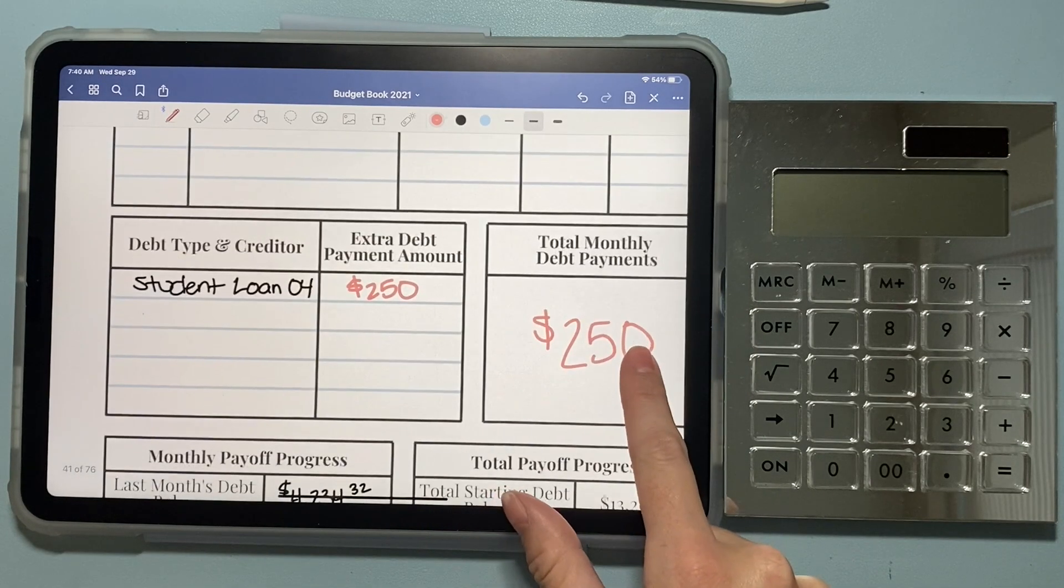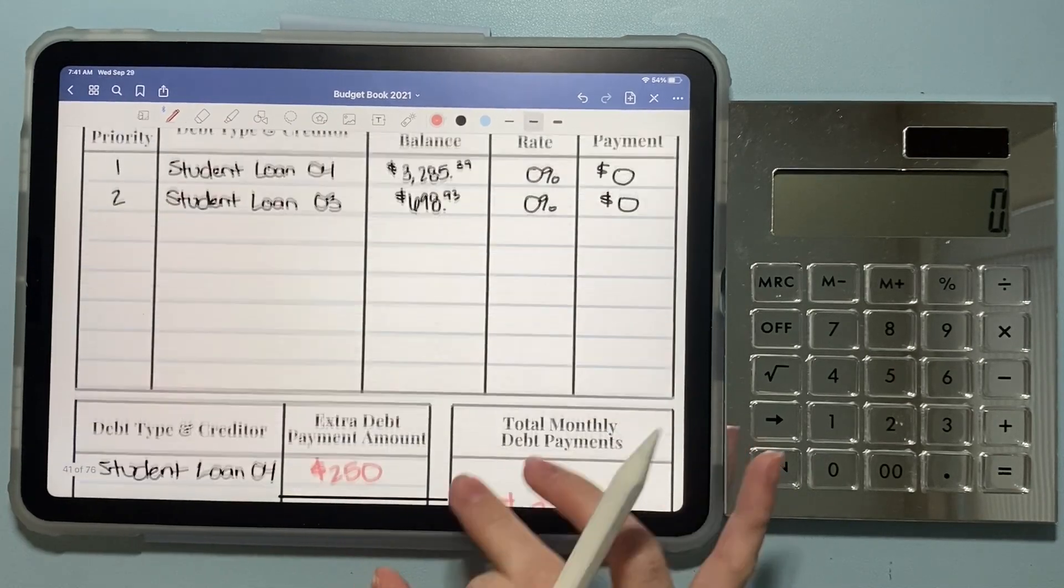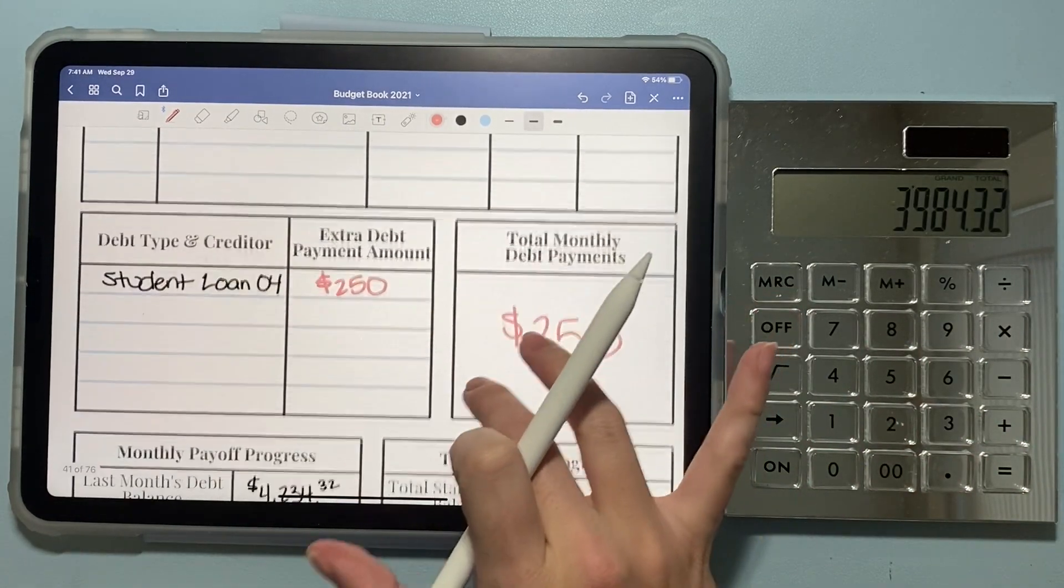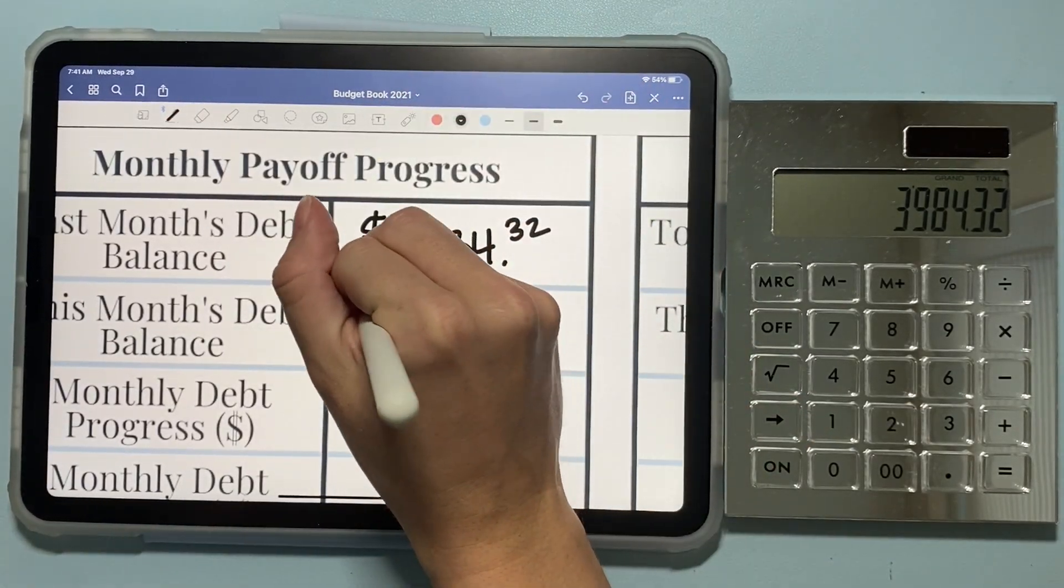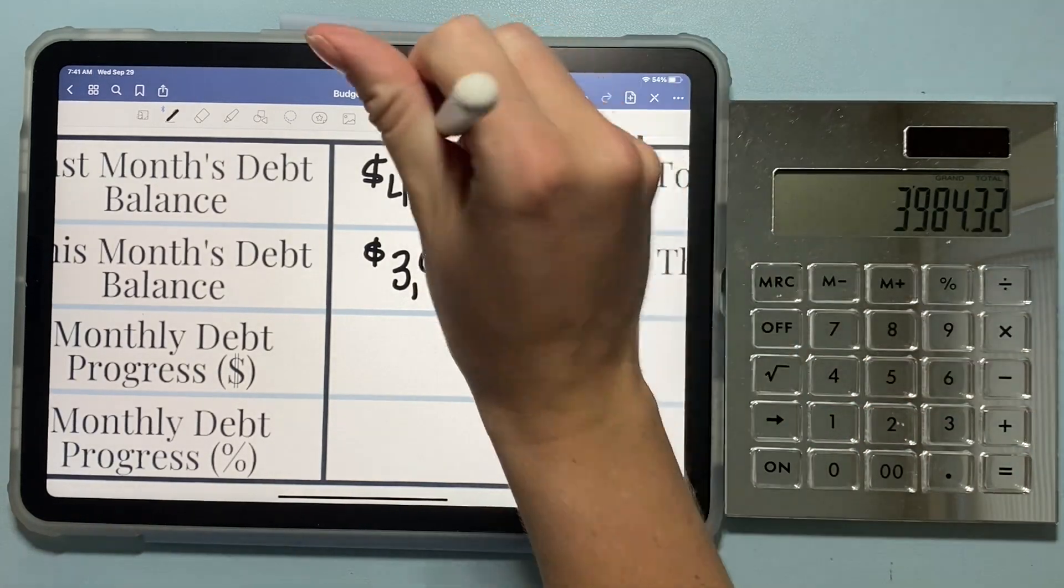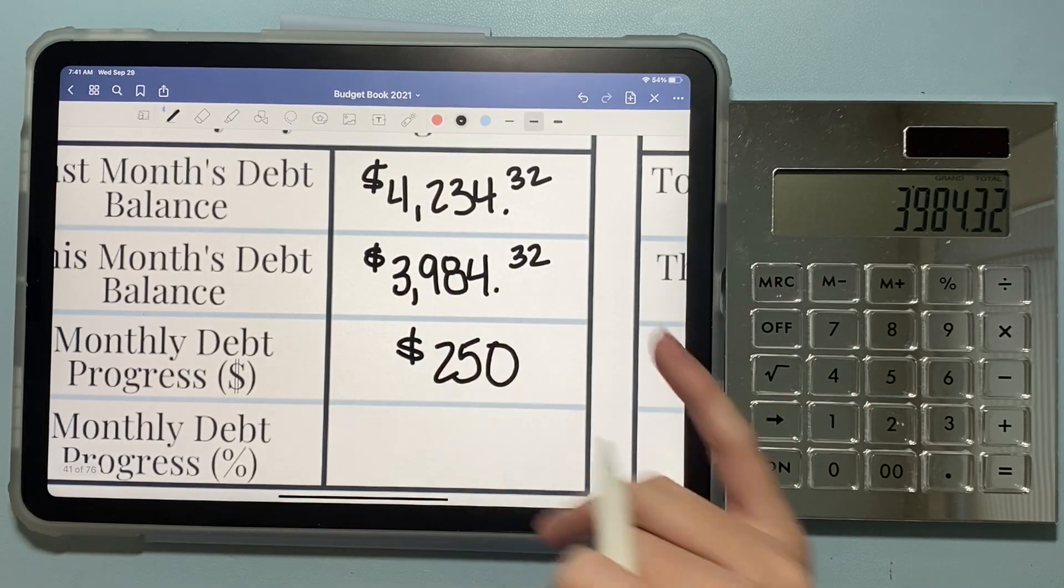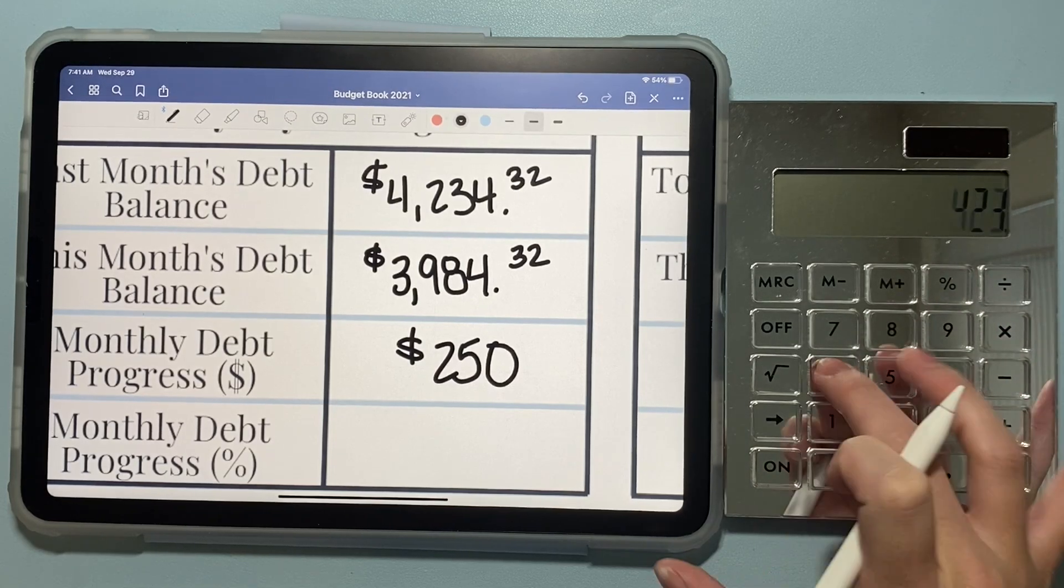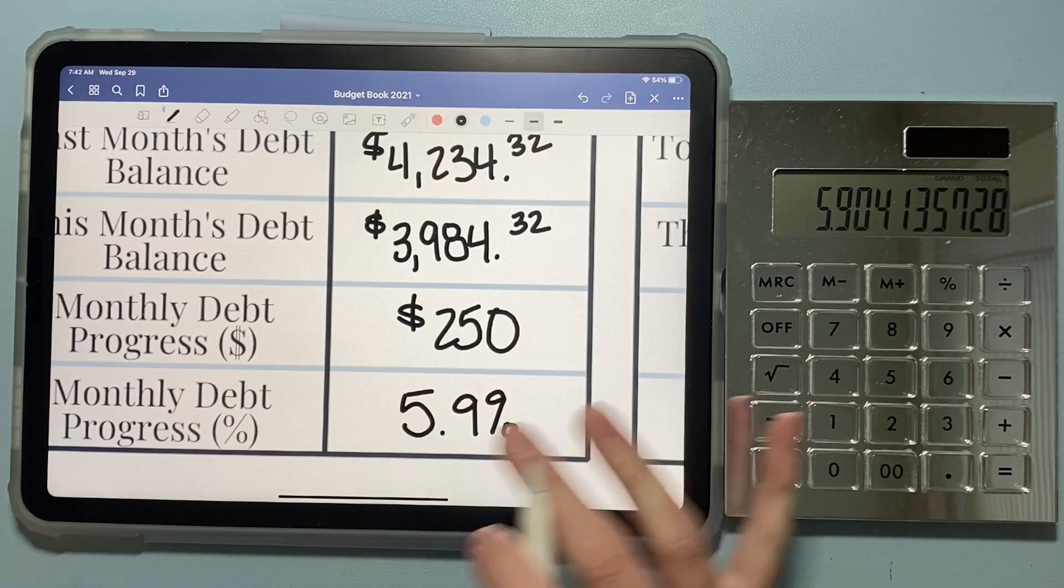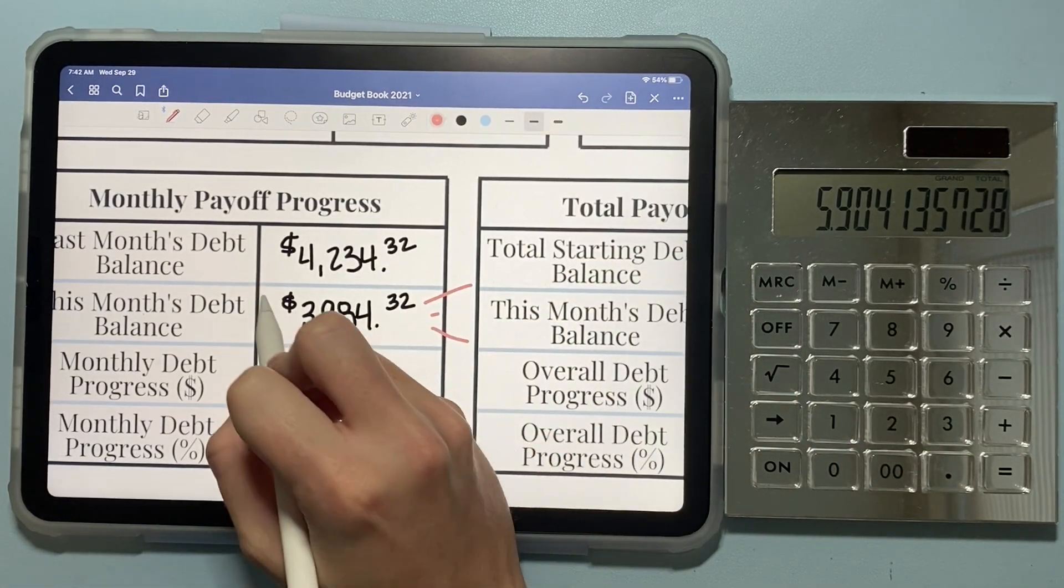So our total monthly debt payment was $250 for the month. And now we're just going to do our progress together. So last month, our debt balance was $4,234.32. And now we get to add up these numbers and see what our current debt balance is. So we'll just add these two together. And we are officially under $4,000, which is super exciting. So we are at $3,984.32, which means we have paid off $250 this month. So we made $250 worth of progress.